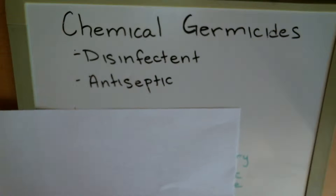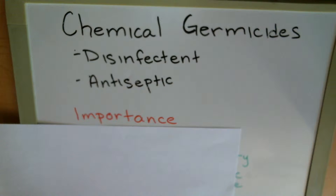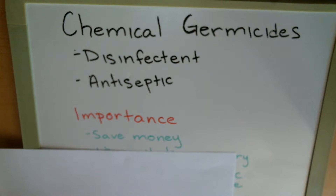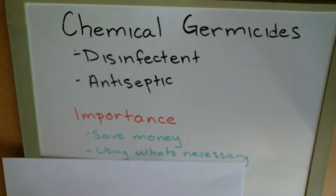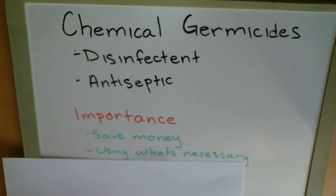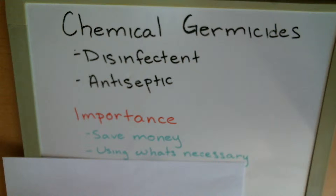An important question is: why do we do this? We do this so that we can save money by using only what's necessary. Say we have a one liter solution of a germicide, but we only need half of that to get rid of a given amount of pathogens. We dilute that one liter solution, giving us two liters — twice the amount, which lasts longer and prevents us from having to buy the germicide as frequently.